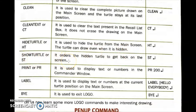Next is the Show Turtle command, written as ST. When we have hidden the turtle, we use the ST command to make it appear again on the main screen. Next is the Print command, known as PR. It is used to display text or numbers in the commander window.